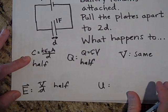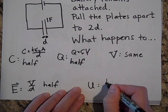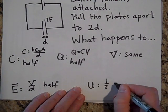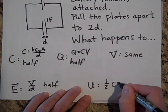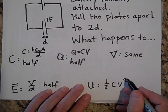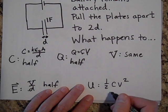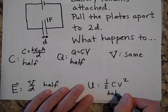Finally, the potential energy is U = ½CV². The voltage hasn't changed, but C is half, so the energy is also half.